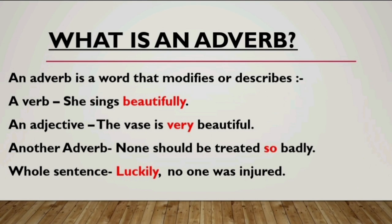The next point is that an adverb modifies an adjective. Let's have a look at this example: 'The verse is very beautiful.' It is describing the adjective 'beautiful' — how beautiful is it? Very beautiful. So 'very' is an adverb and 'beautiful' is the adjective.